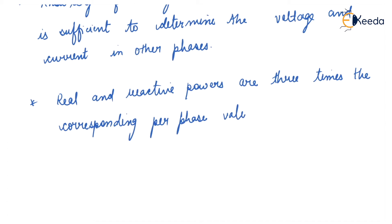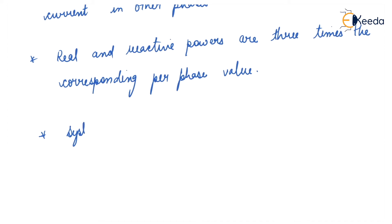These are the conditions for a balanced system. When the system is unbalanced, voltage, current, and phase impedances are in general unequal.